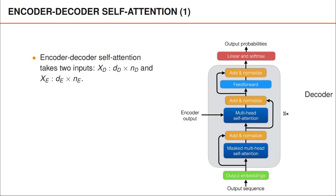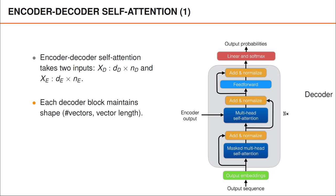The number of column vectors in these matrices is not necessarily the same. The number of vectors in capital XD, here denoted ND, is determined by the number of vectors fed into the decoder, whereas the number of column vectors in the encoder output XE, here denoted NE, is determined by the length of the sequences fed into the encoder. As mentioned in the previous video, the output from all layers in the decoder has the same number of vectors as the input to the first self-attention layer in the decoder.